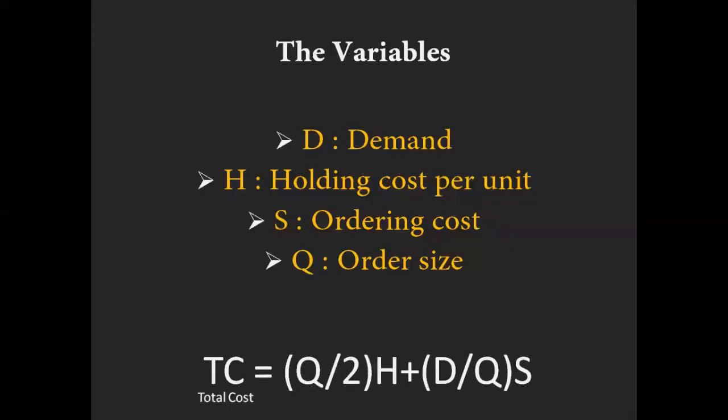Our total cost equation is: (Q/2) × H, which represents the average inventory times the cost of holding one unit — this is our annual holding cost. The right-hand side is (D/Q) × S, where D divided by Q tells us how many orders we place per year, multiplied by S the ordering cost, giving us the total ordering cost for the year. Note that the units of measure for D and H must be identical. So our total cost equation has two components: holding cost and ordering cost.